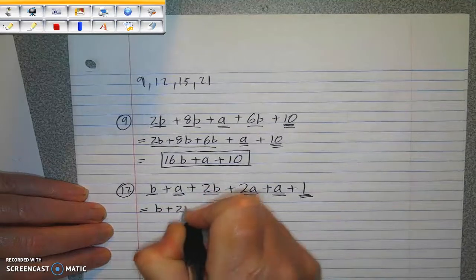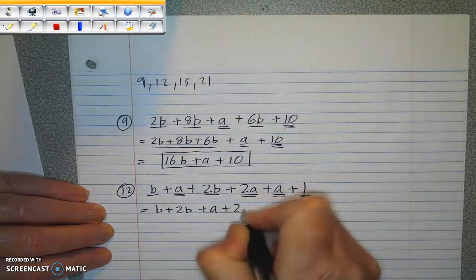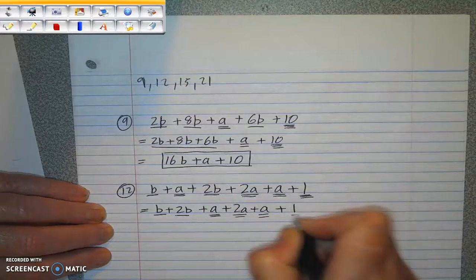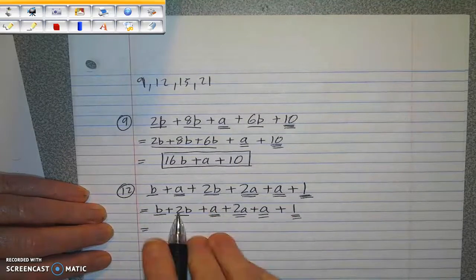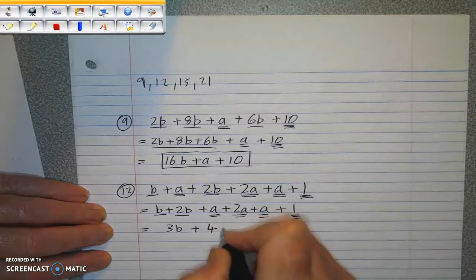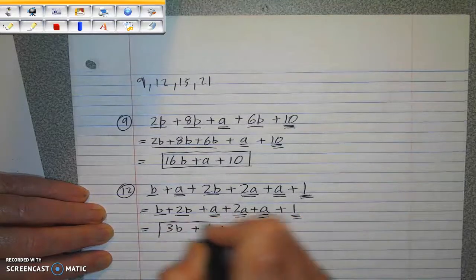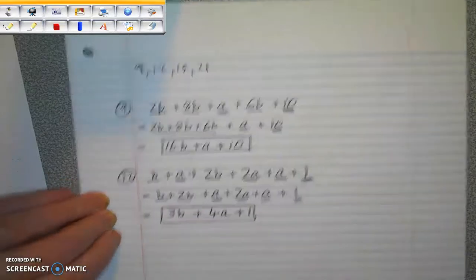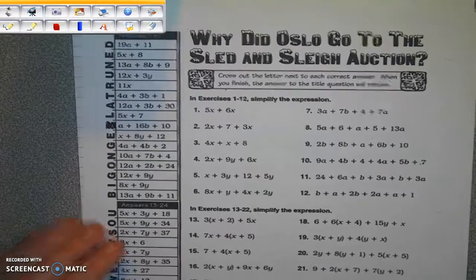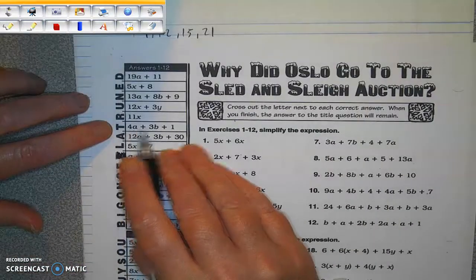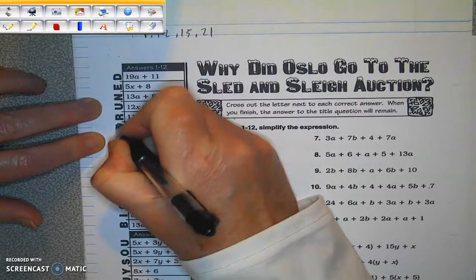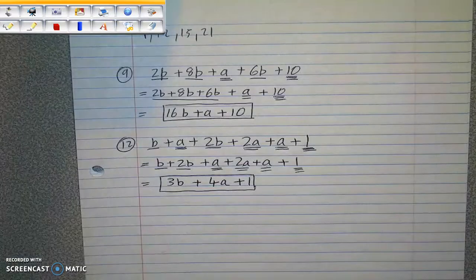So I have B plus 2B plus A plus 2A plus A plus 1. I have a banana and I have two more bananas, which means I have three bananas. I have an apple, I have two apples, and I have one more apple. That means I have four apples, and I have the constant one. And again, they cannot be added together any further because they are unlike terms. And now I'm looking on my answer key for 3B plus 4A plus 1. They have them in alphabetical order actually here in the answer. So they have 4A plus 3B plus 1. So I'm crossing out the letter next to that.